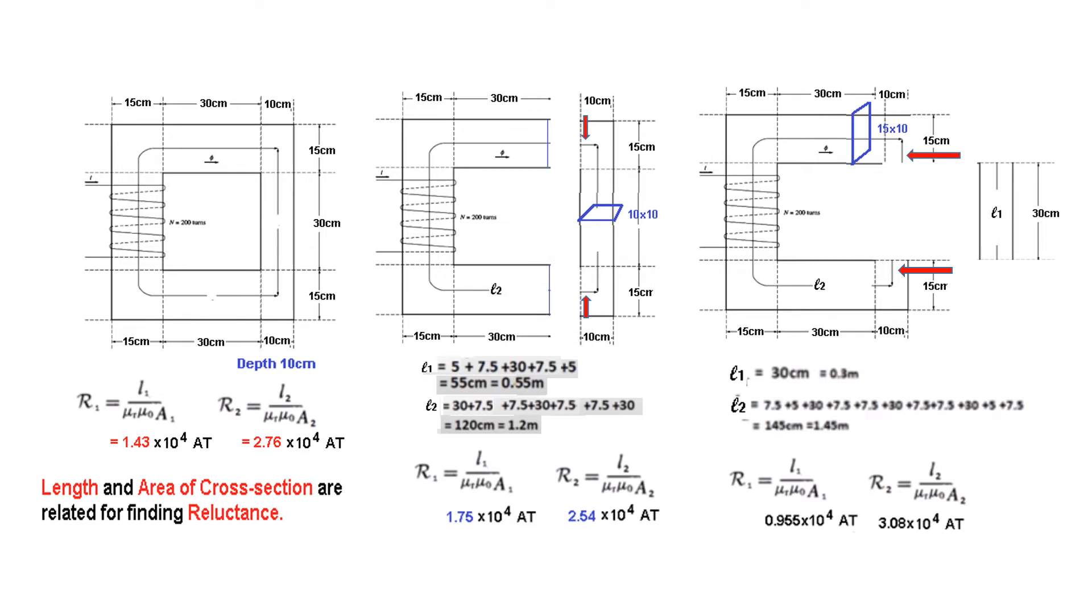And similarly, when I was separating this, then I was taking this as a length L2, and I was including this part and this part in the area of cross section of 15 by 10, which is wrong. This should have been part of the area of cross section here, 10 by 10.